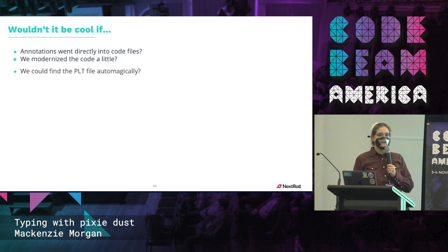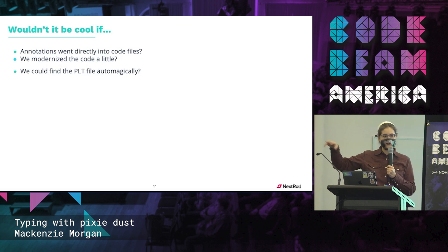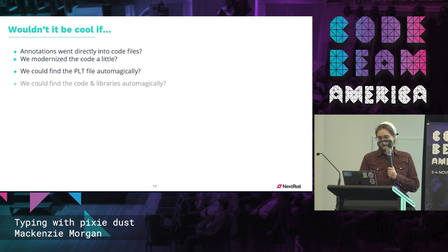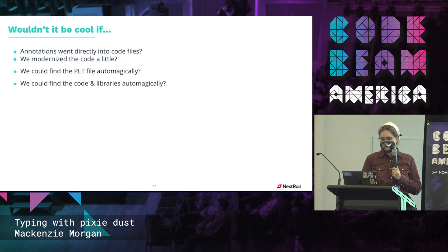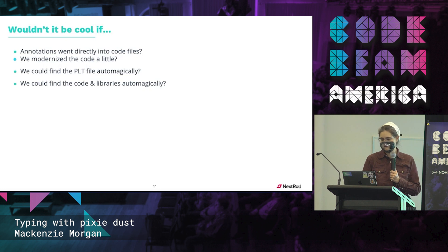What if we could find the PLT file from Dialyzer automatically, instead of having the developer configure where it is? Right now if you use Typer on the command line, you have to pass that as an argument. And what if we could find all the code and libraries automatically? We know where they go by default, where Umbrella apps put them, where it's configured in rebar config. We should just use it — that's the benefit of integrating into rebar.